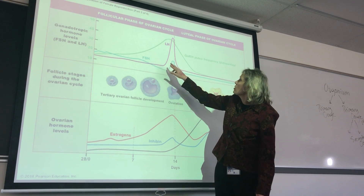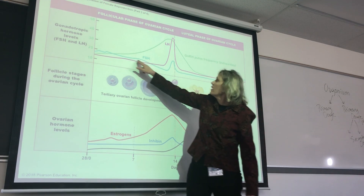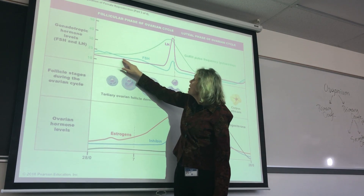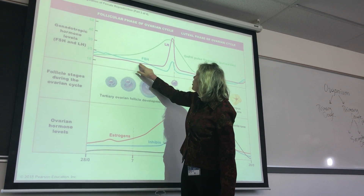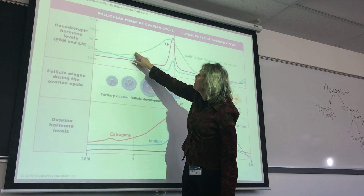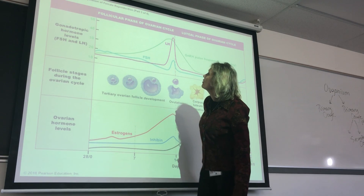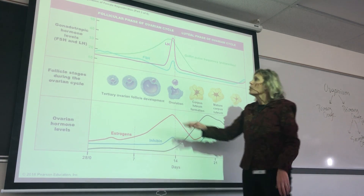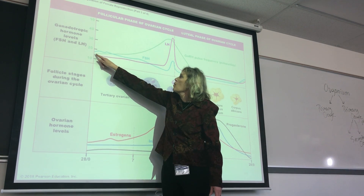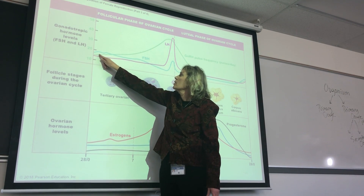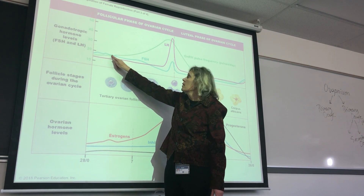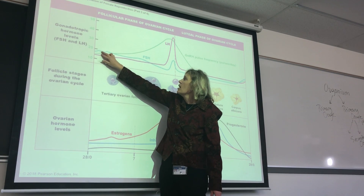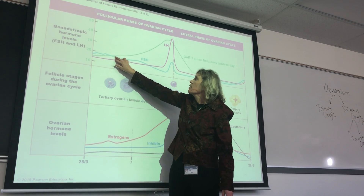Here FSH and LH are shown in purple, and the gonadotropic releasing hormone is in green. The gonadotropic releasing hormone is pulsing really low. In low pulsing, FSH and LH are not going to be released.